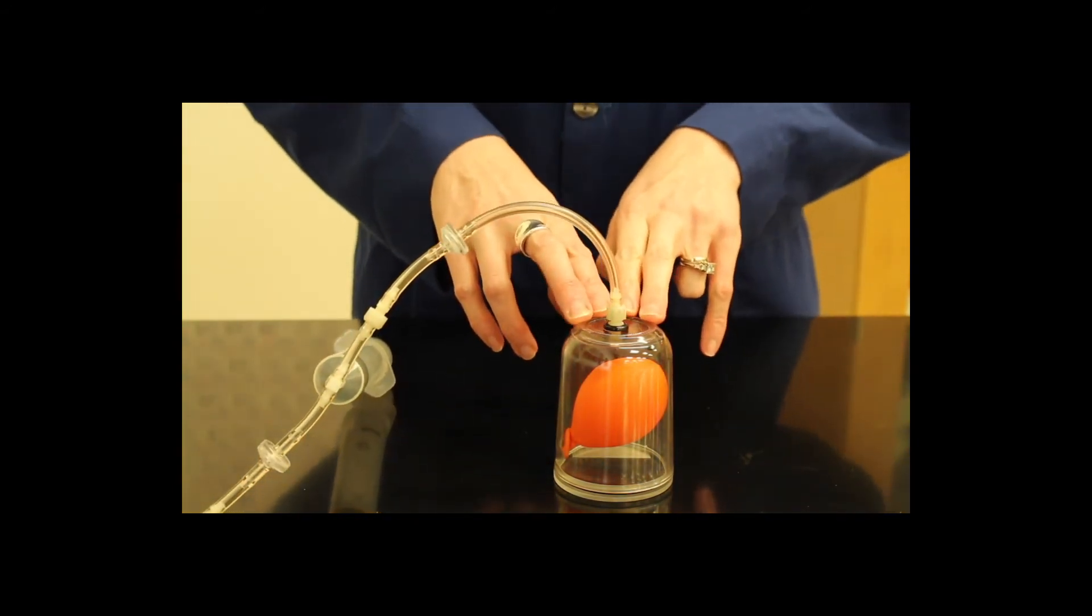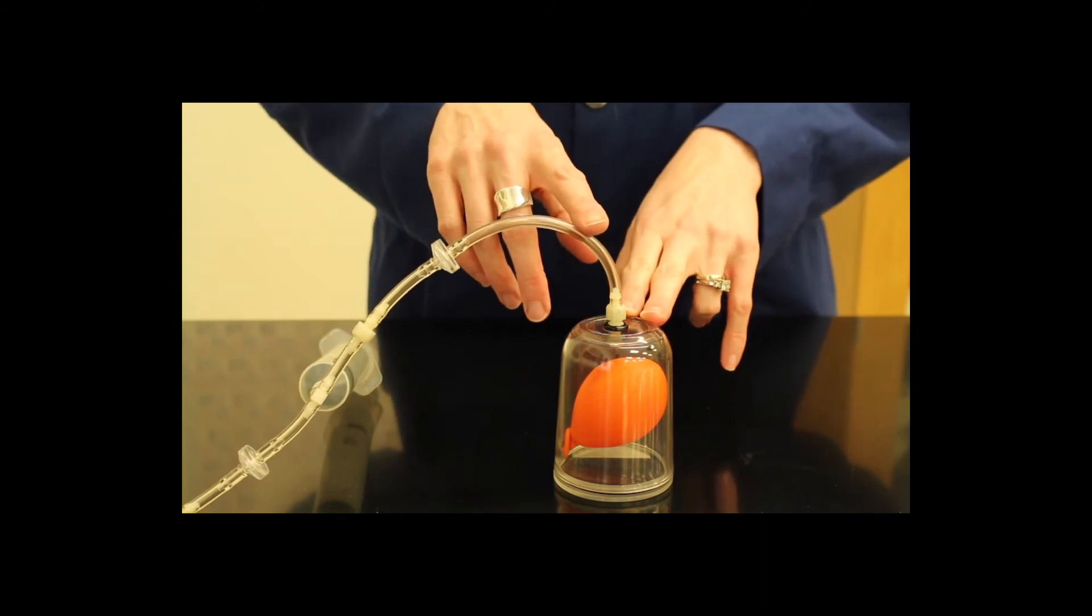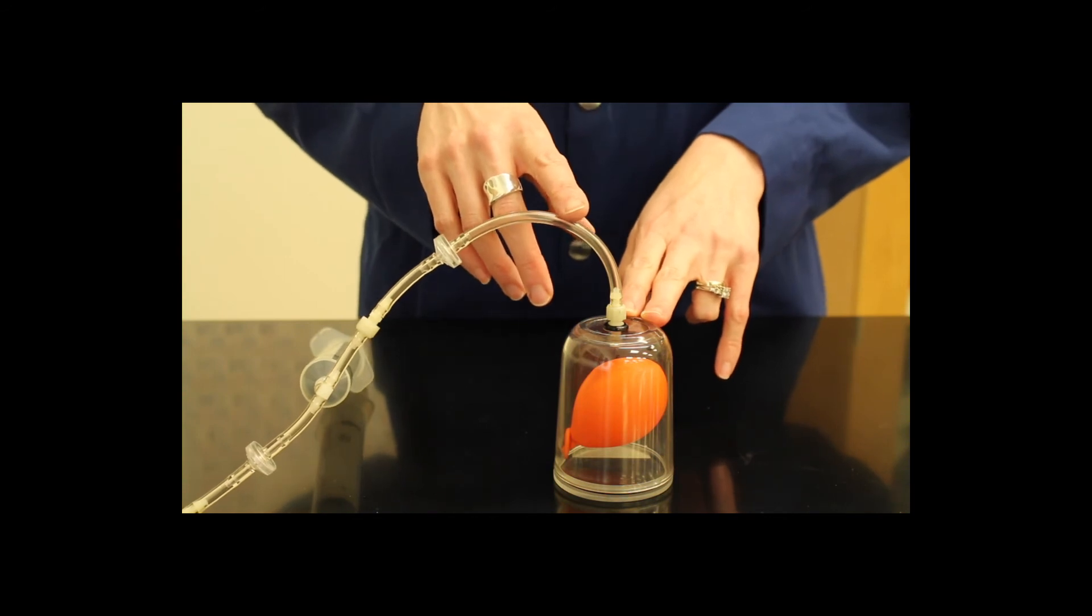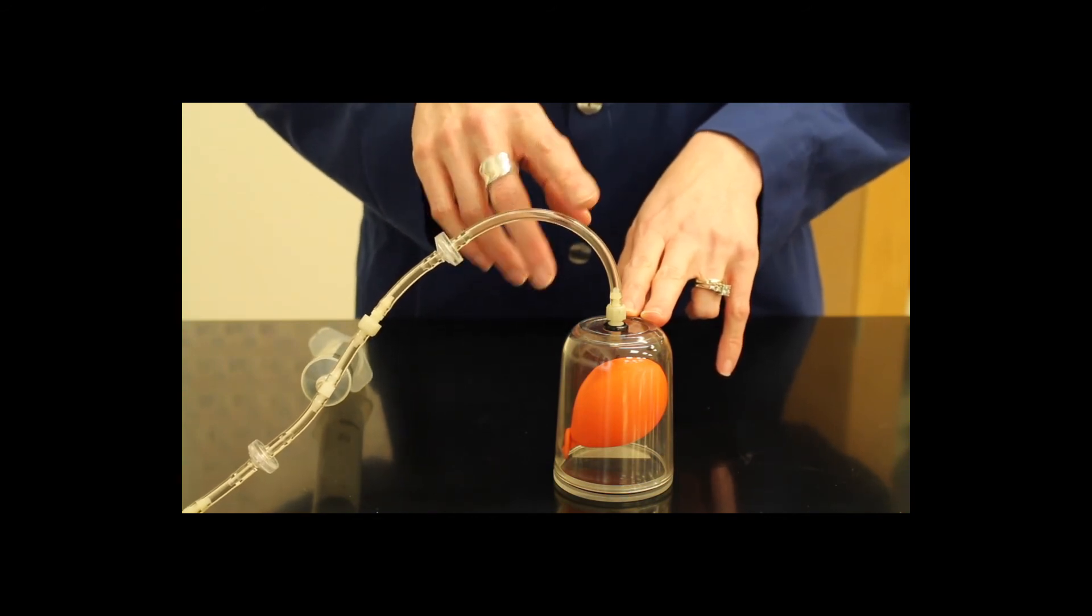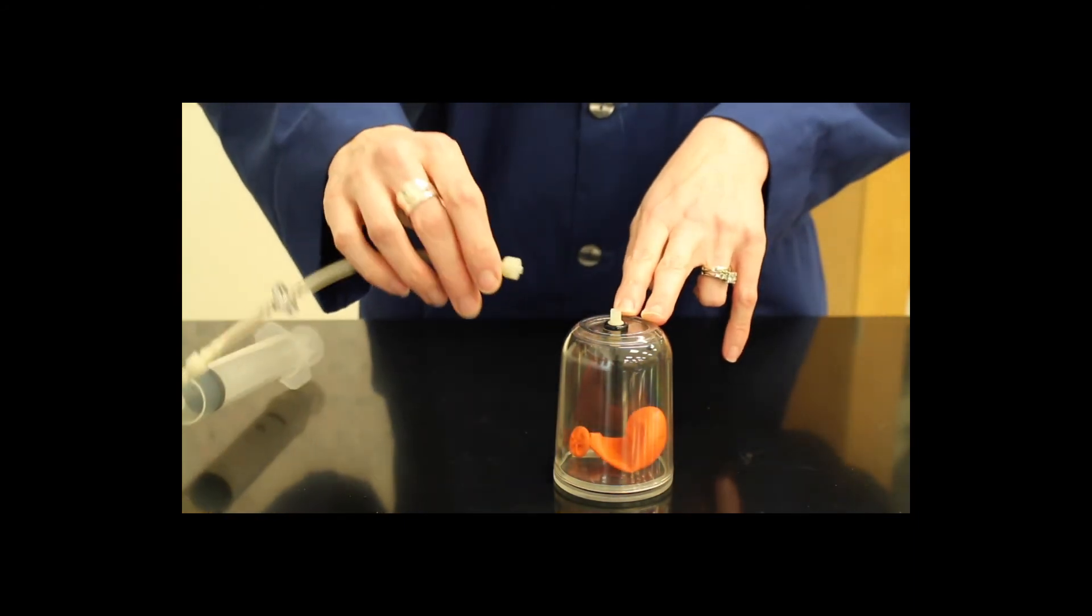What we're going to do now is we're going to remove the tubing. And as we remove the tubing, that's going to allow air back inside the bell jar. That is going to result in an increase in pressure, which causes a decrease in volume.